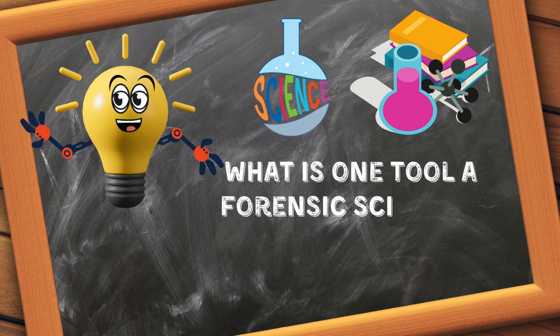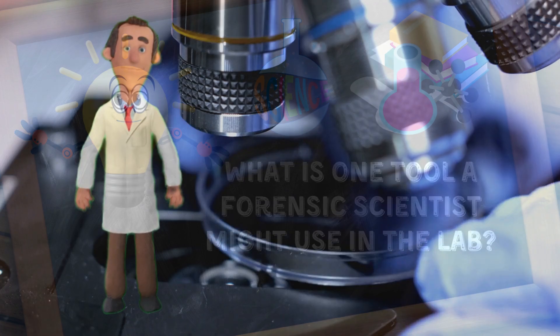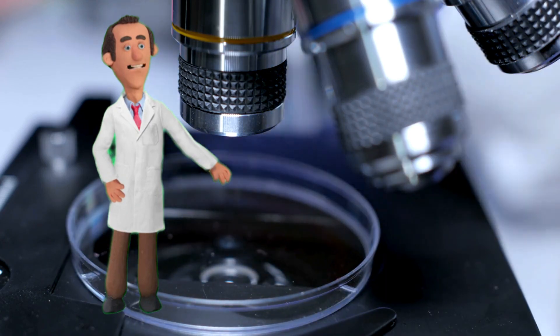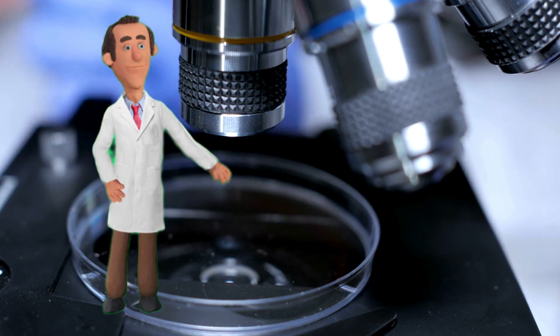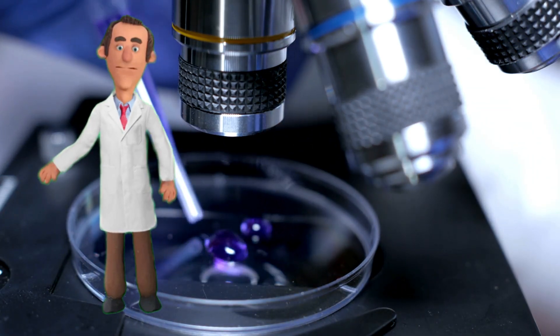What is one tool a forensic scientist might use in the lab? Lots of tools. But a good example is a microscope. It helps us look at tiny bits of evidence.